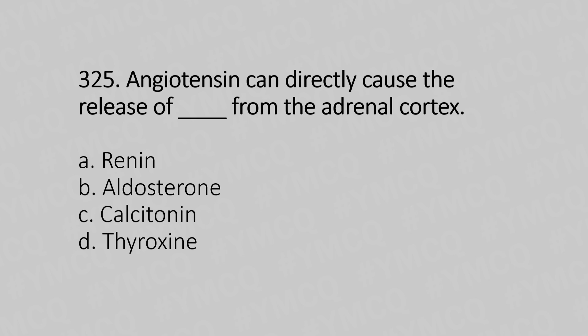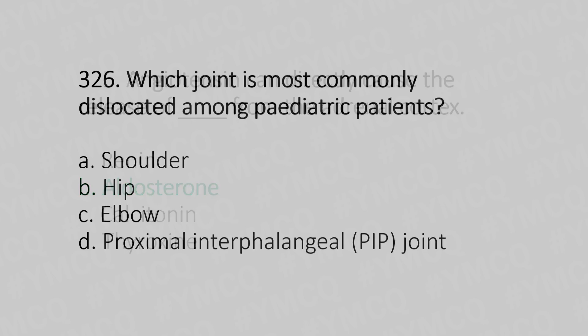Question number 325: Angiotensin can directly cause the release of what from the adrenal cortex? Option A: renin. Option B: aldosterone. Option C: calcitonin. Option D: thyroxine. The answer is option B, aldosterone.